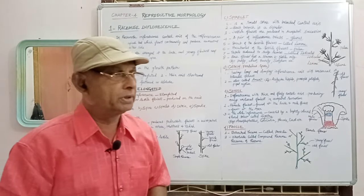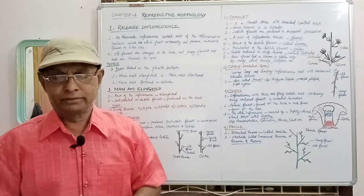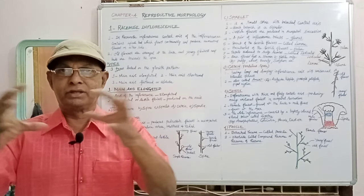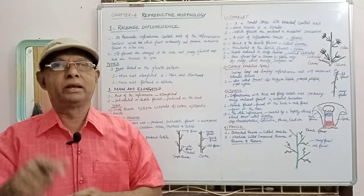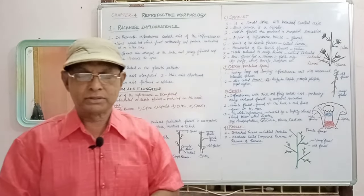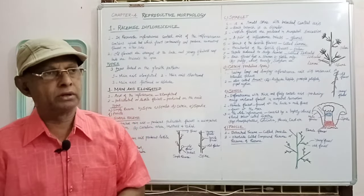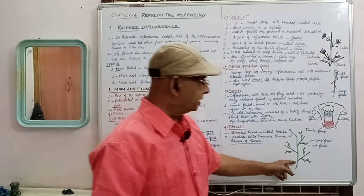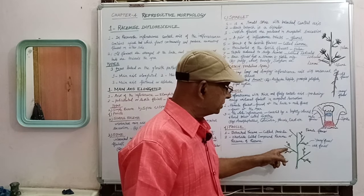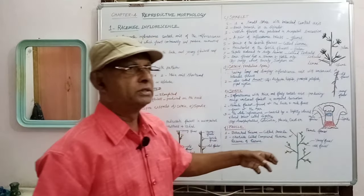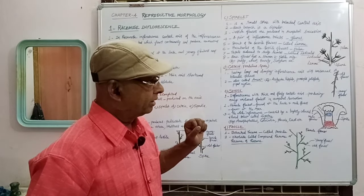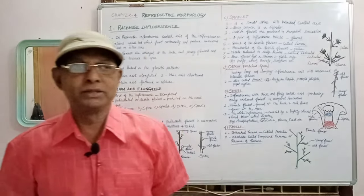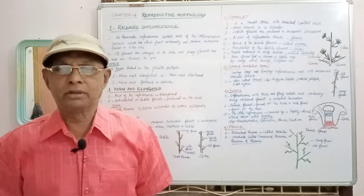The next type is panicle, which is always called branched raceme. Several simple racemes produced on the same inflorescence axis form the panicle inflorescence. It is otherwise called compound raceme, or raceme of racemes. This is the panicle inflorescence — several simple racemes are grouped together to form a compound raceme called panicle. Panicle inflorescence can be seen in the case of Ricinus.